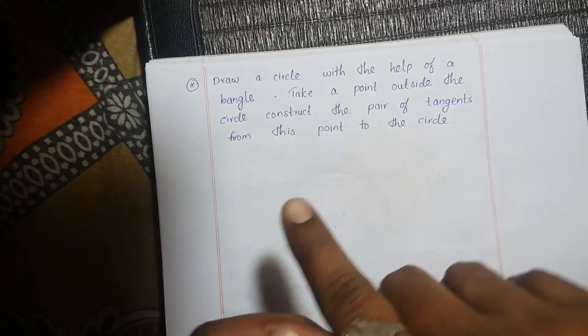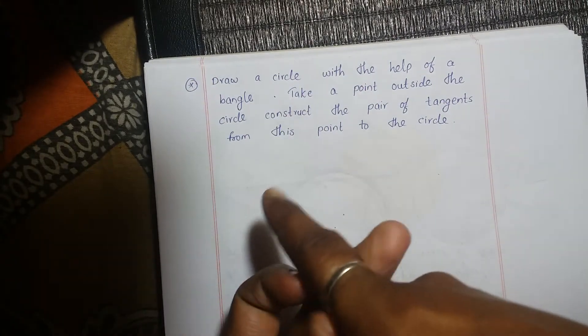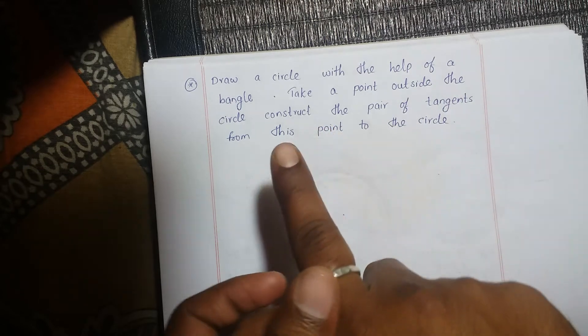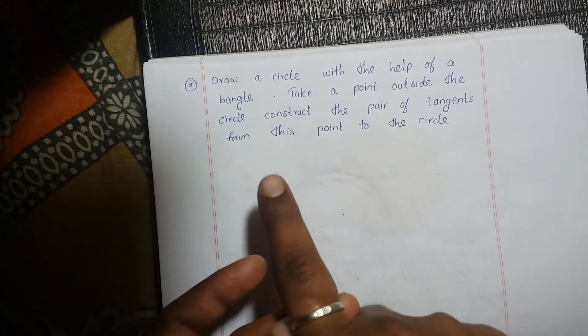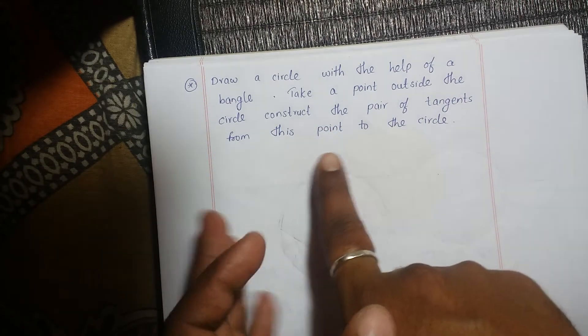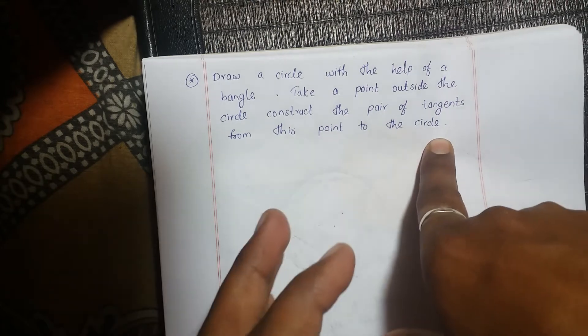Draw a circle with the help of a bangle, take a point outside the circle, and construct a pair of tangents from this point to the circle.